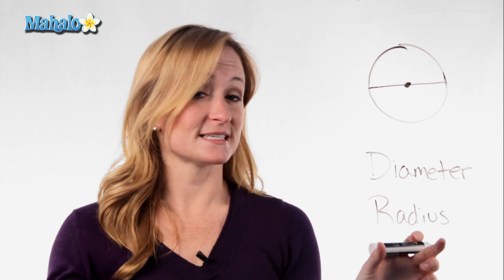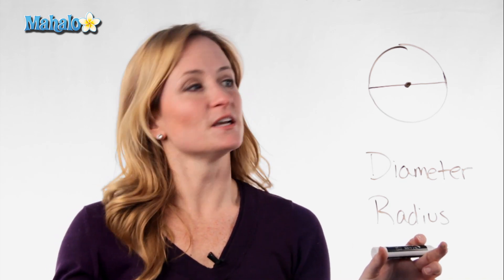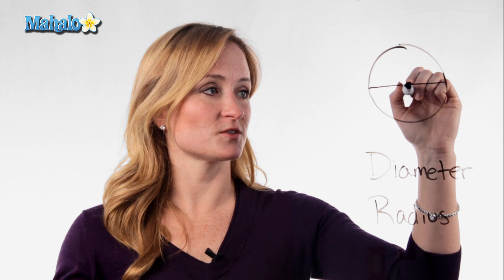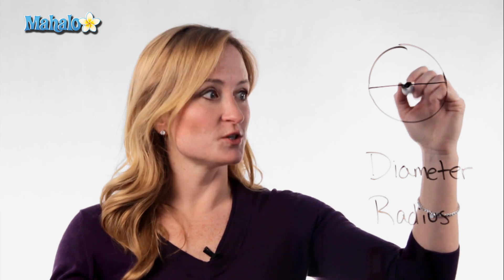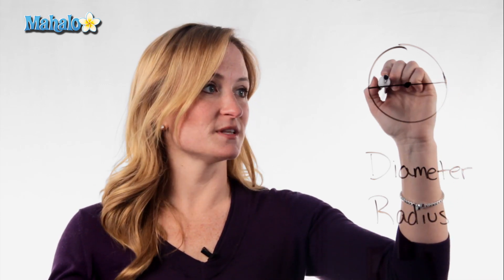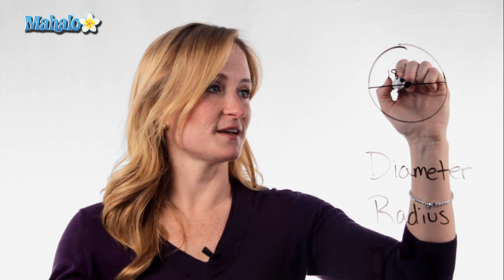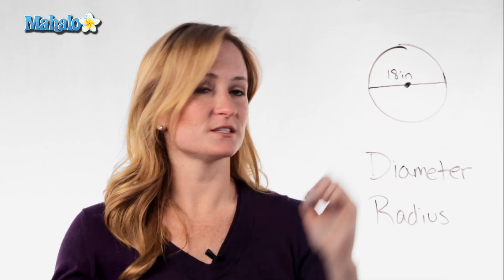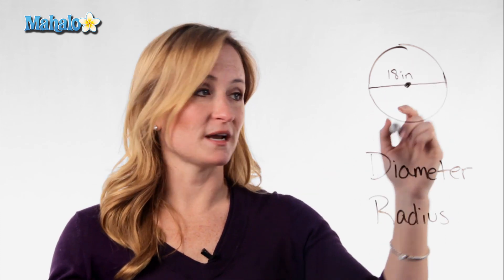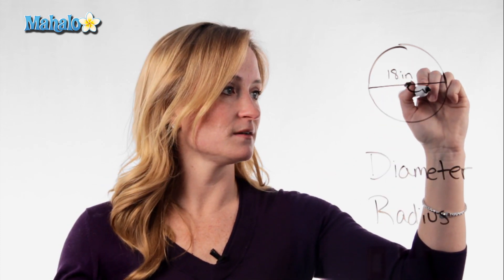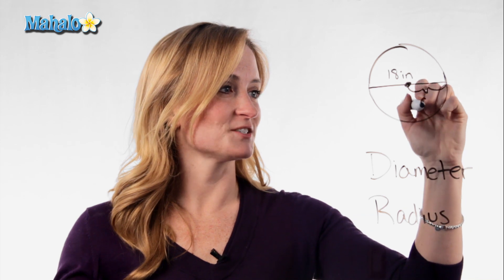A radius is half of that. The radius is any measure from the center point of the circle to any part of the circle. So in this case, if the diameter were 18 inches, the radius in this circle would be 9 inches.